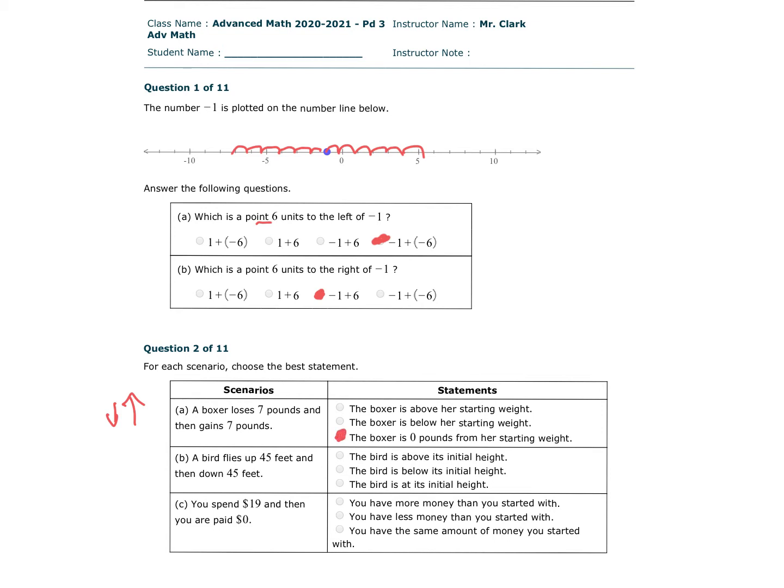A bird flies up 45 feet and then down 45 feet. So we did plus 45 and then plus negative 45 or minus 45. So it's back to its initial height. You spend $19, down 19, and then you're paid $0. So where are you now? You're down $19. You have less money than what you started with. What did you buy for $19?